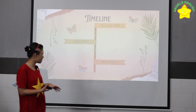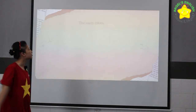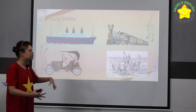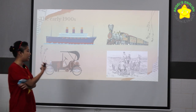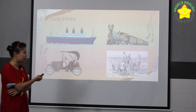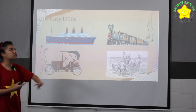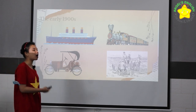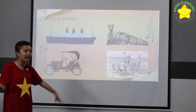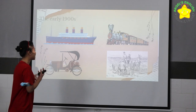Then the 1940s, and lastly the 1950s. So the early 1900s: people used ships, mostly for carrying things, but people did travel by ships too. Secondly, trains. The trains in the early 1900s are very old and they can only sit, not lie down like trains nowadays.